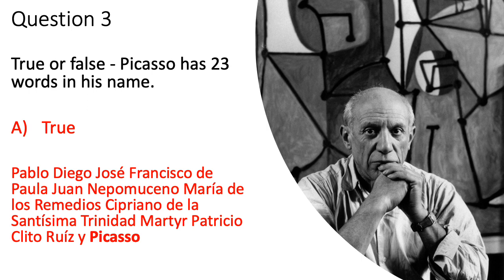The answer to question three was yes, it was true — Picasso does have 23 words in his name. His name, if I can pronounce it correctly, is Pablo Diego José Francesco de Paula Juan Nepomuñeca, María de los Remedios, Cipriano de la Santa Misma, Trinidad Marta, Patricio, Clito, Ruiz y Picasso. The Picasso actually comes from his mother's name, which was María Picasso y López.